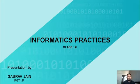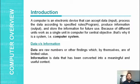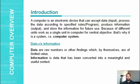Hello everyone, this is Gaurav Jain, going to teach you IP — that is Informatics Practices for Class 11th. This is our first chapter: Computer Overview. My first question is: what is a computer system? A computer is an electronic device that accepts data as input, processes it according to specific rules or a program, produces information as output, and stores the information for future use. Because of these different units working as a single unit for a common objective, it's called a computer system.